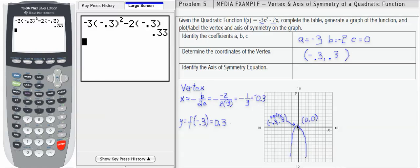Now the next thing we're going to do is to identify the axis of symmetry equation. This is a vertical line that cuts that parabola in half. It's going to have the equation x equals the x-coordinate of the vertex.